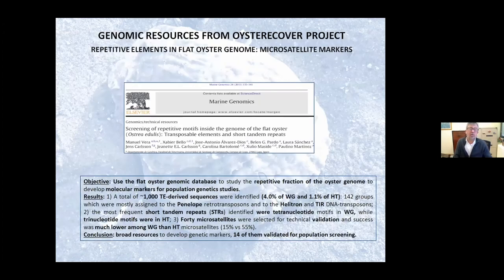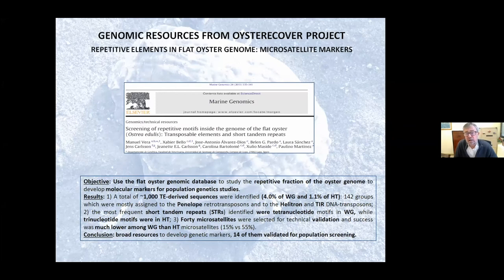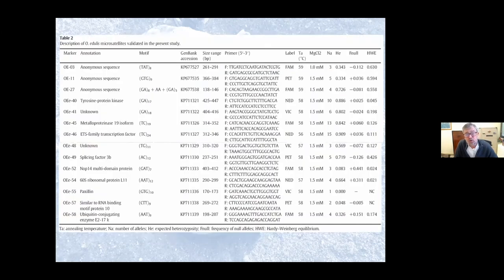From this database, our first work was to analyze the repetitive elements in the flat oyster genome, both at the whole genome level and at the transcriptome level of the hemocytes. We analyzed transposable elements, but especially focused on microsatellite markers, because we were interested in enlarging the microsatellites available for the analysis of population genetics in the Atlantic area of flat oyster. We tried to develop many new microsatellites and validated 14 of them. The high variability and polymorphism in the flat oyster genome is likely responsible for this low validation success. We could use these 14 new microsatellites alongside the previous 11 for the analysis of flat oyster populations in the Atlantic area.